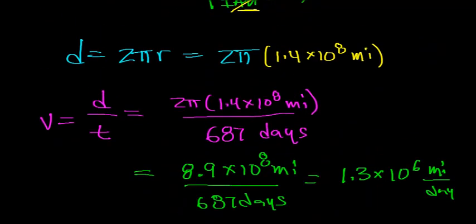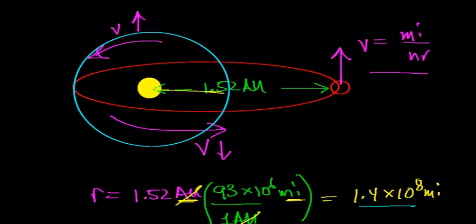Keep in mind that the velocity actually increases and decreases as the distance between Mars and the Sun changes, so this is the average orbital velocity.